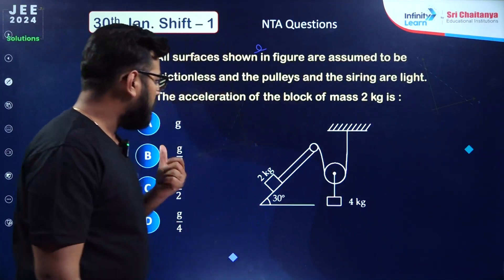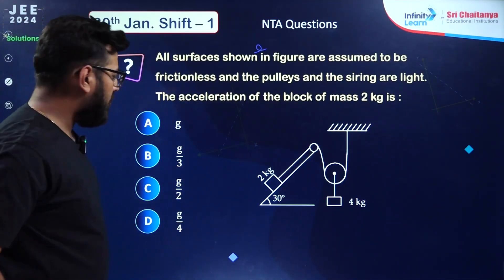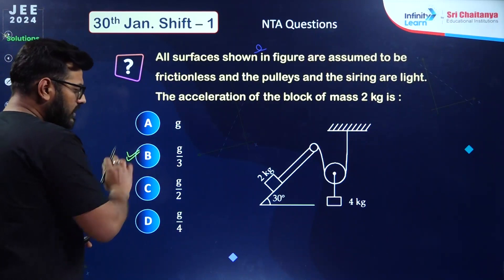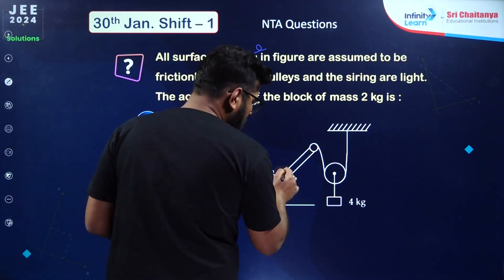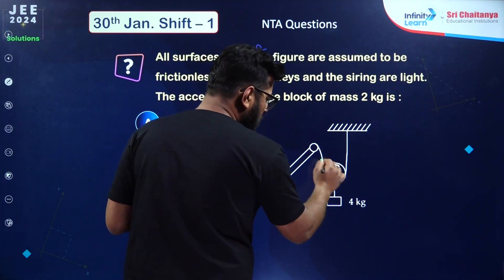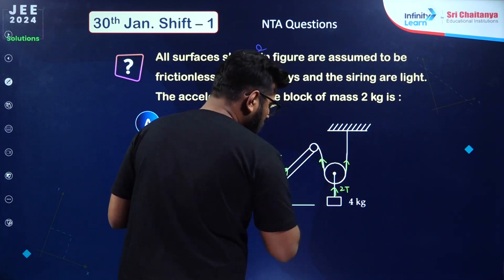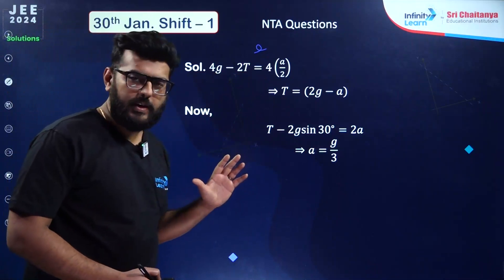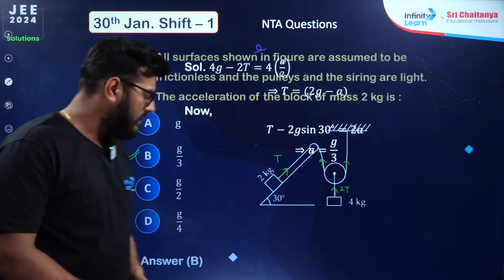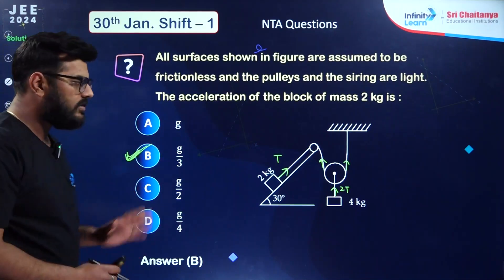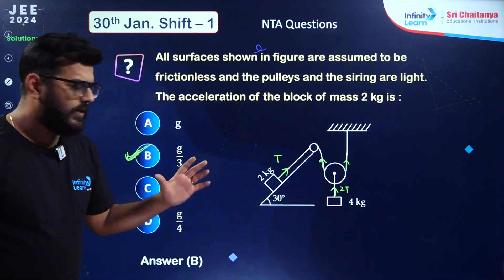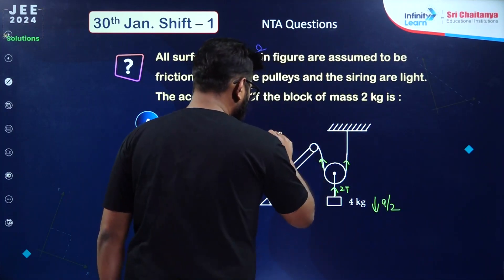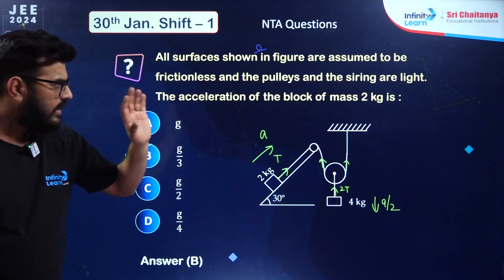Moving ahead to the next question from laws of motion. In some answer keys this was given wrong. The correct answer is option number B, that is g/3. It's a simple laws of motion concept — you need to take tension T, which becomes T, T, and 2T. Writing down the equations from Newton's laws of motion, the acceleration of one part is a/2 and the other is a. The correct answer will be g/3.